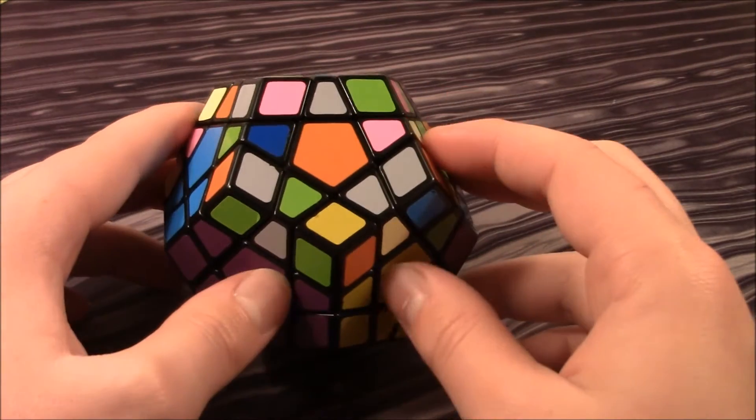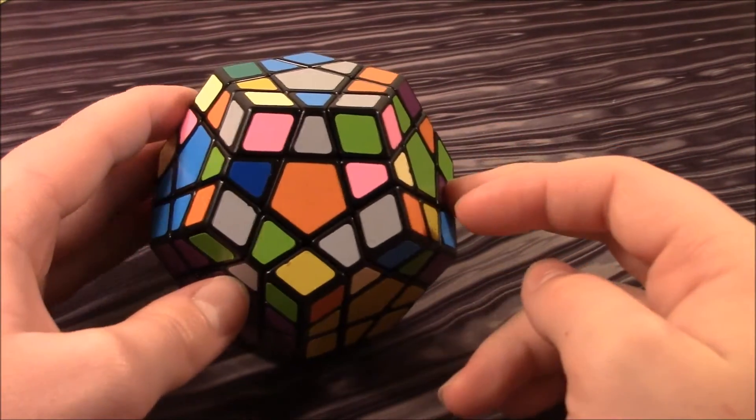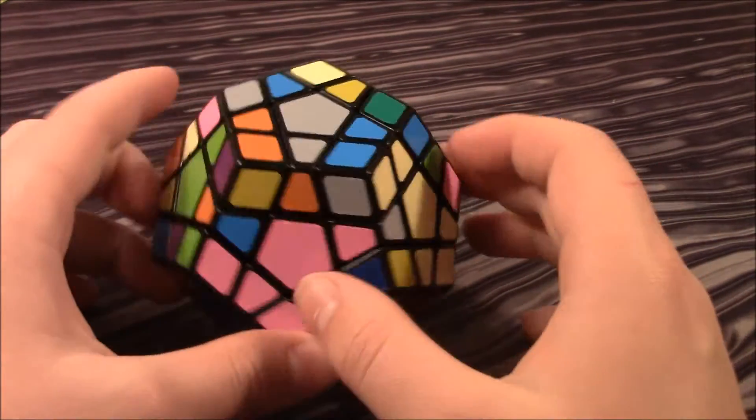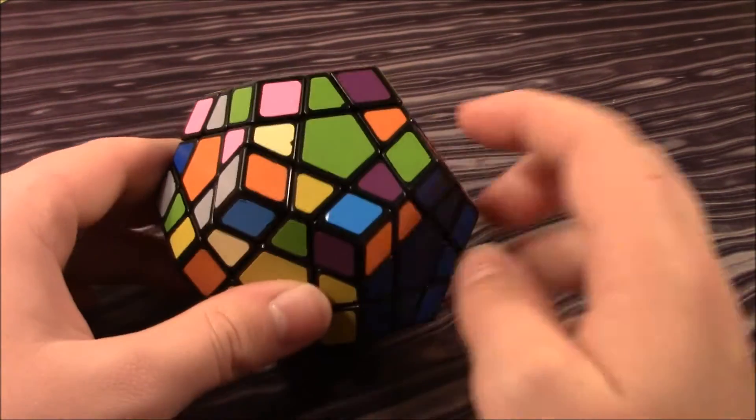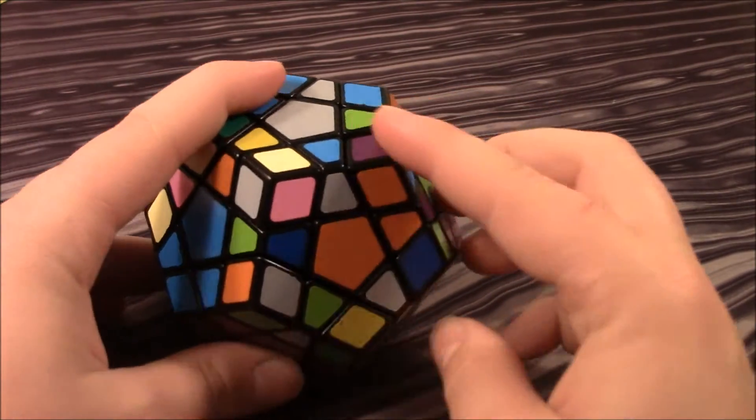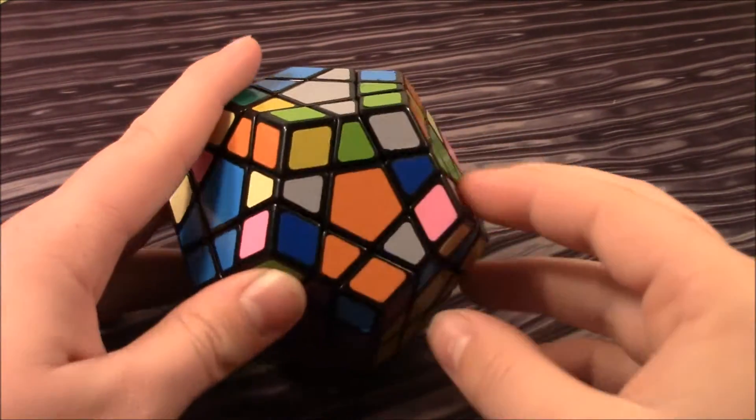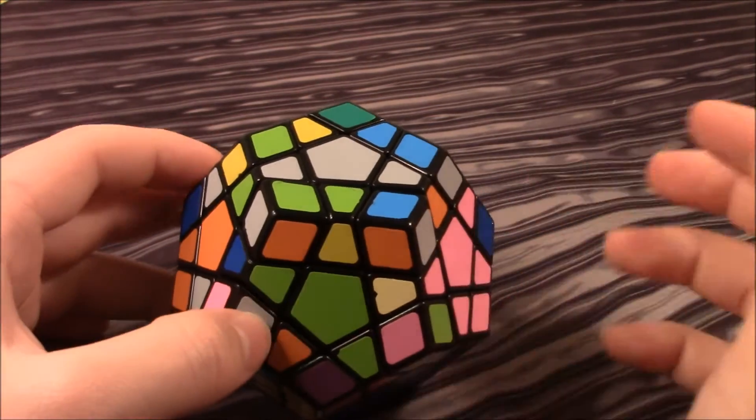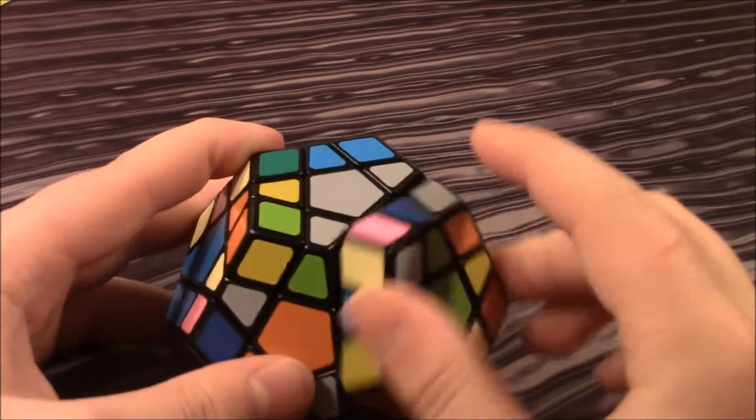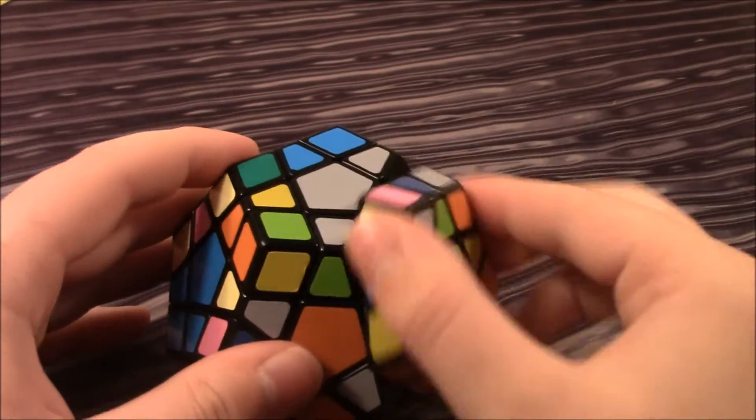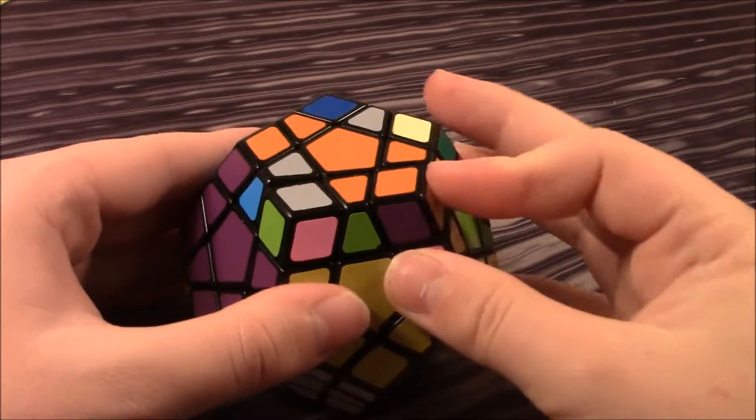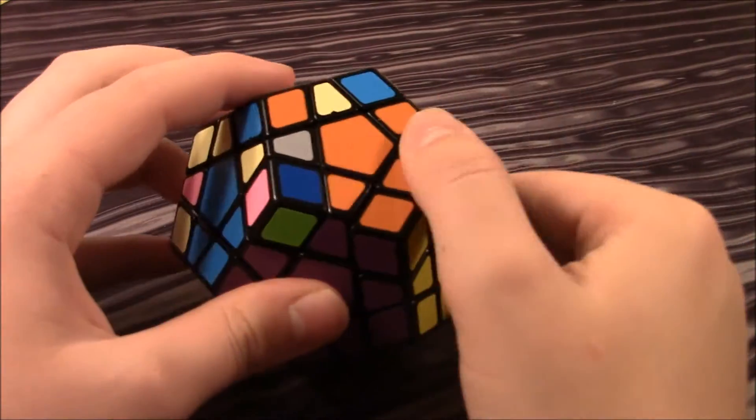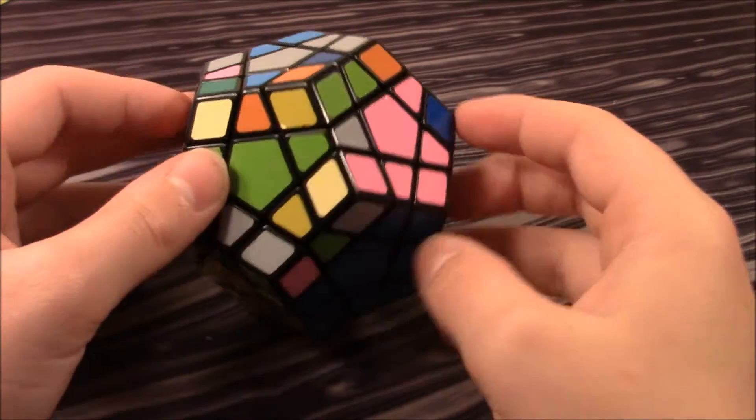And now the orange, purple, and dark yellow. So where's the orange and purple edge? Let's see. Here it is. Just bring it up and insert it there. Now orange, purple, and dark yellow corner. It's right here. And the edge is right here. So I can just do that, and then do a sledgehammer. I prefer doing sledgehammers. You can do whatever you want.